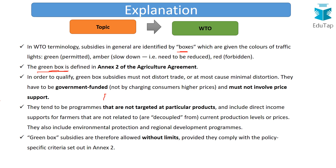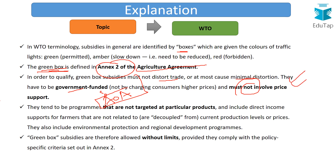The green box is defined in Annex 2 of the Agricultural Agreement. In order to qualify for green box subsidies, the subsidies must not distort trade, or if they do, the distortion must be minimal. They must be government funded and must not involve price support — that is very important.